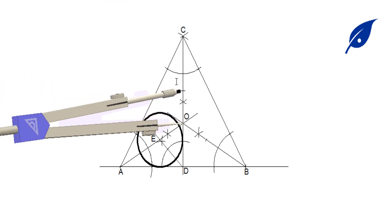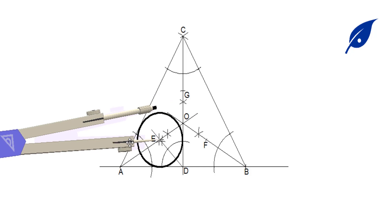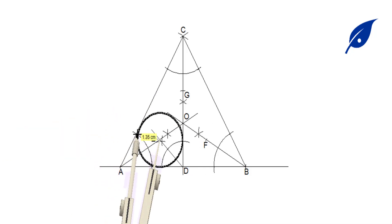With the center at O and radius EO, we'll mark on line OB and OC to get points F and G, which will be the centers of the remaining circles.